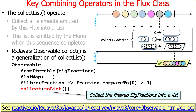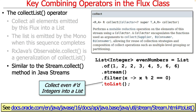RxJava has a method called collect that works very similar to collect list, except you have to say collect to list — so it's ever so slightly different. And collect list is quite similar to Java Streams' to-list method, which collects results into a list. The main difference, of course, is that Java Streams' to-list returns an actual list, not a mono to a list.